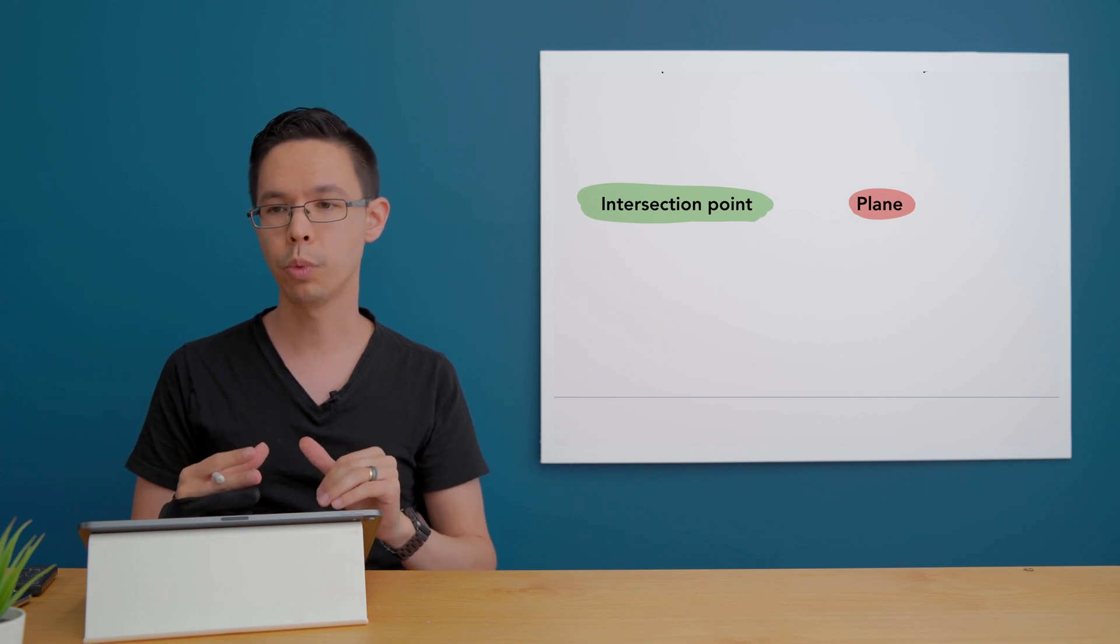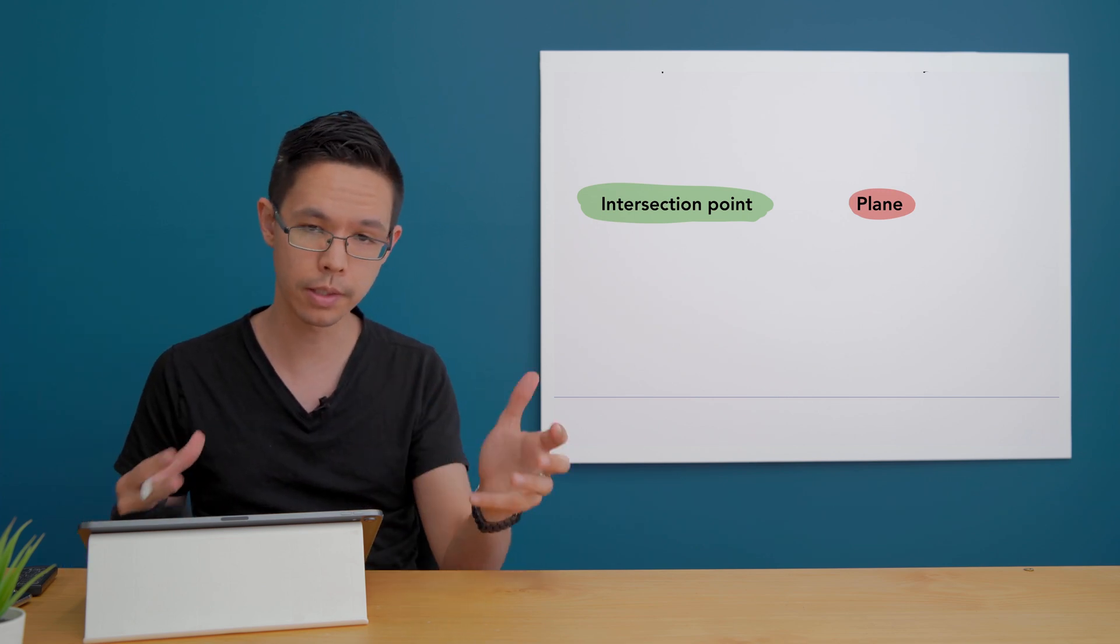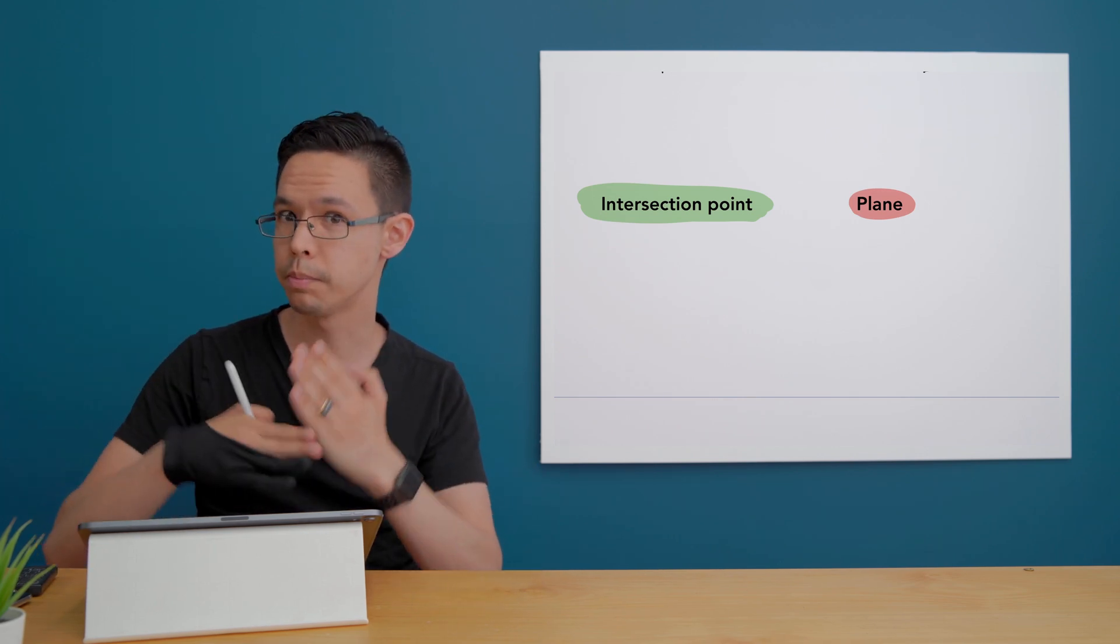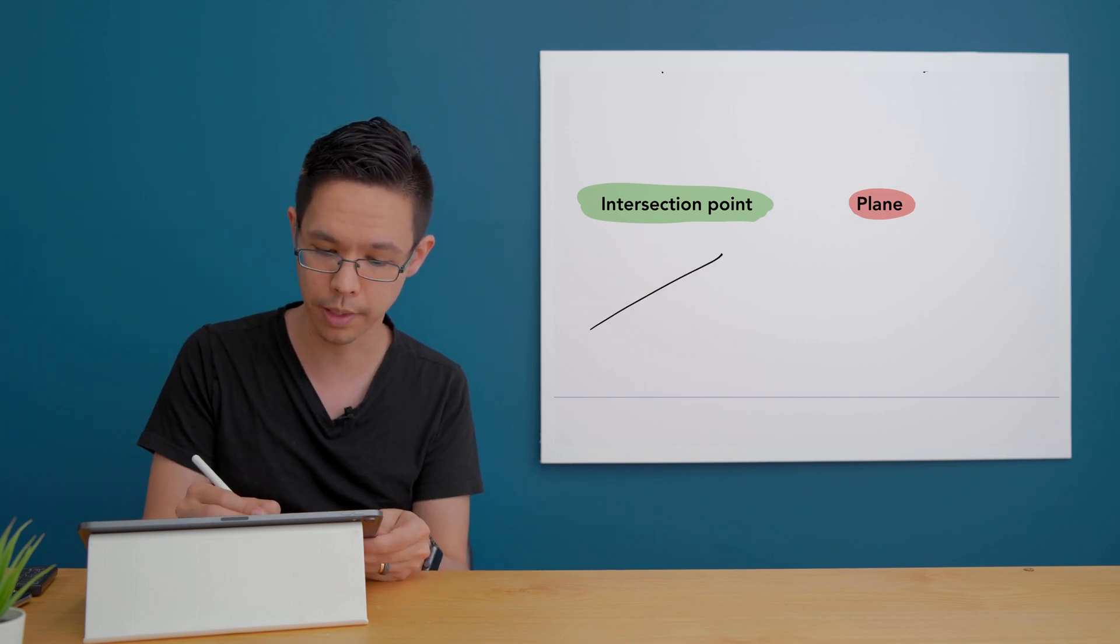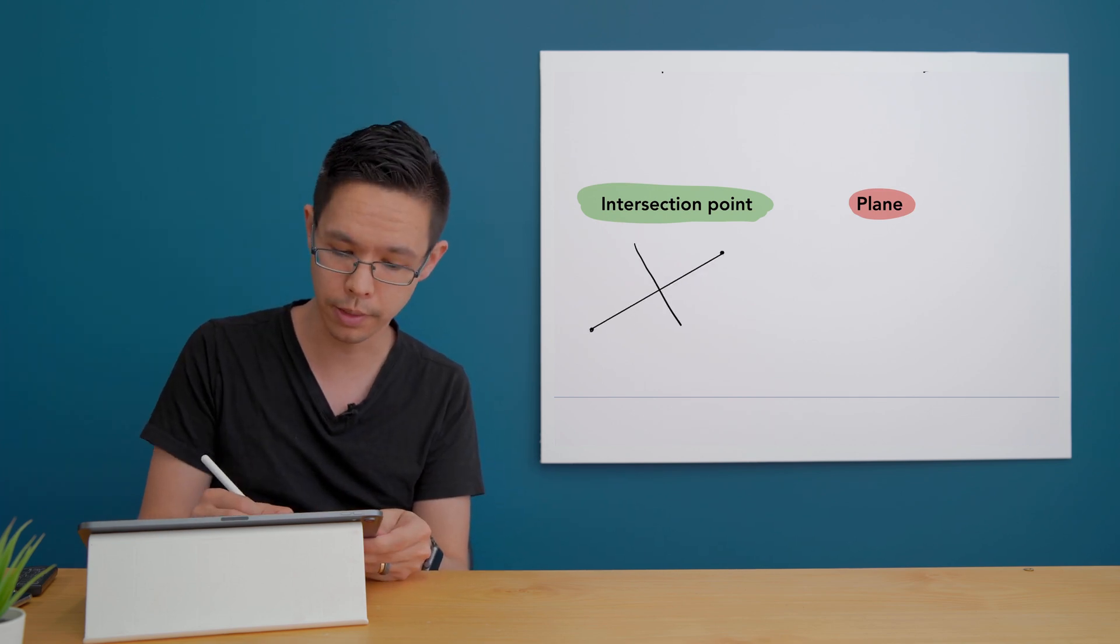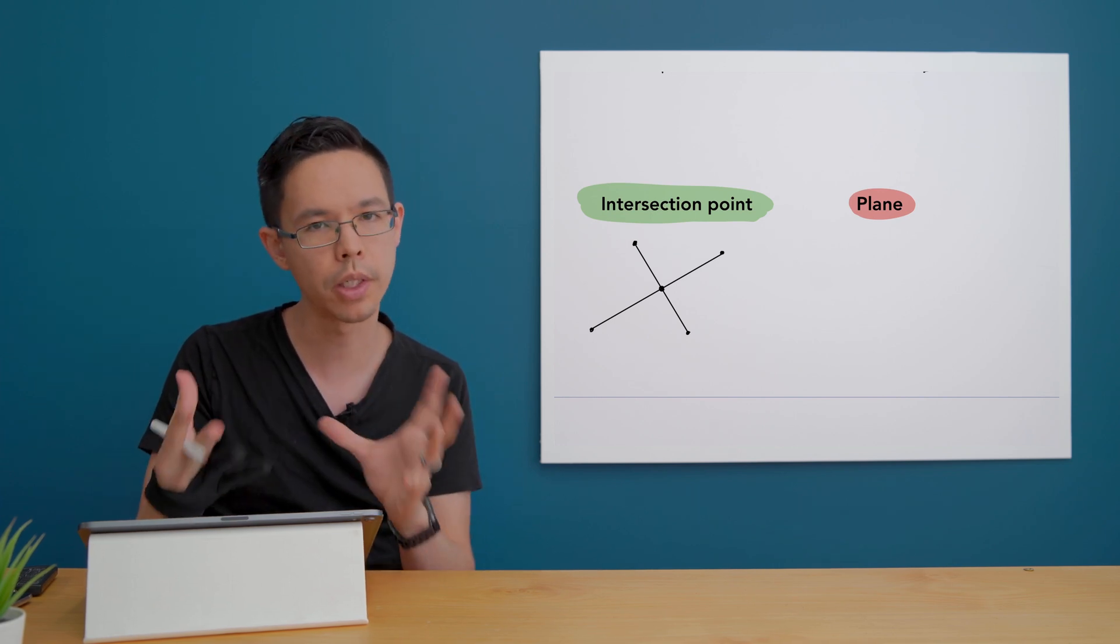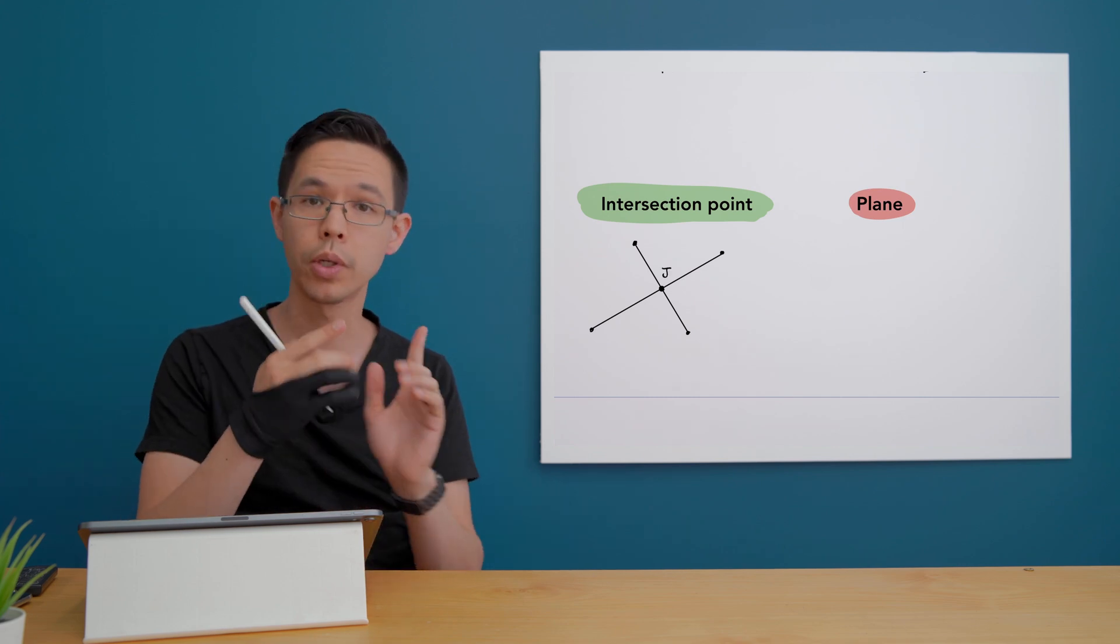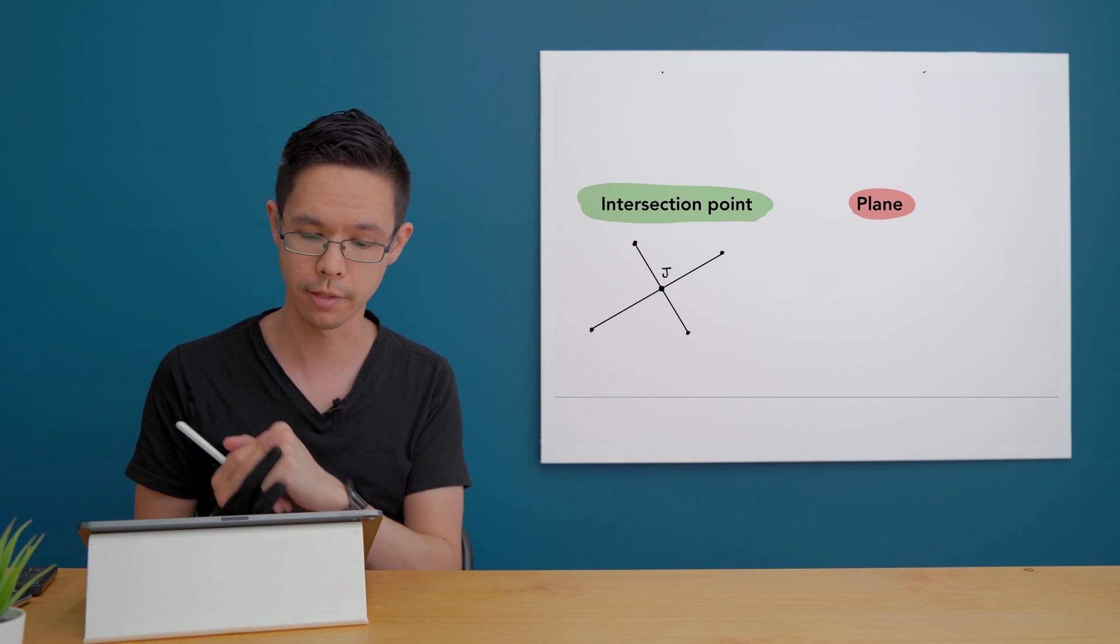An intersection point is when two lines meet together or cross over one another. So if I've got a segment from here to here and I've got a segment from here to here then my intersection point would be this point here in the middle. You would say that the point J is the intersection point of those two line segments.